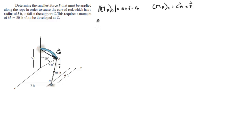So let's find all the points involved first. The points involved are A, B, and C. A is 0 in the i plus 5 sine of 60 in the j plus 5 cosine of 60 in the k, which is equal to 0 in the i plus 4.33 in the j plus 2.5 in the k. B sits at 6 in the i plus 7 in the j plus 0 in the k. And C sits at 0 in the i plus 0 in the j plus 5 in the k.